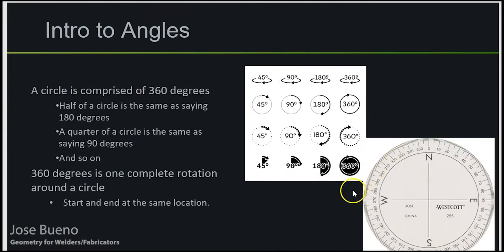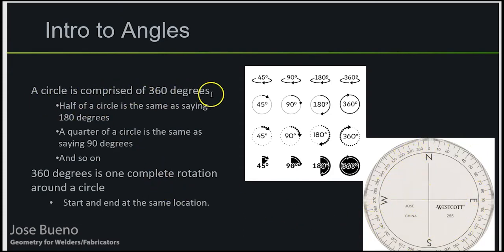As we start talking about angles, a full circle is 360 degrees. If I start at one point on a circle — it doesn't matter which point — and I travel the entire length of the outer edge and stop in the exact same place that I started, I will have traveled 360 degrees.